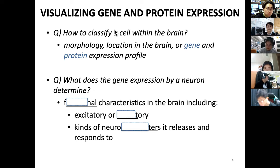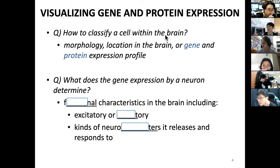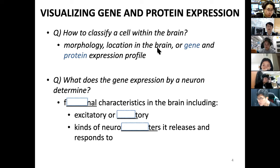Let's discuss visualizing gene and protein expression. The question we are asking is: how do we classify a cell within the brain? The brain is a complicated organ with many different types of sub-regions and cell types. Morphology is a key factor, as is location in the brain, and what determines each single cell's functionality or type really depends on gene and protein expression profiling.